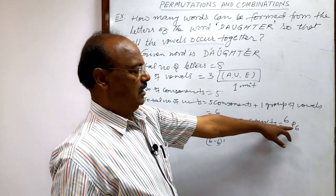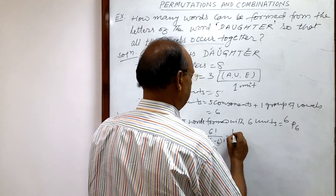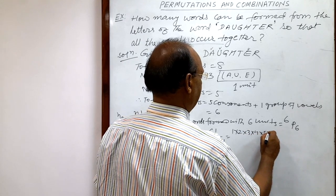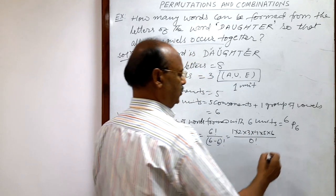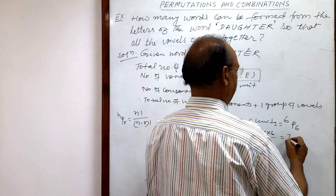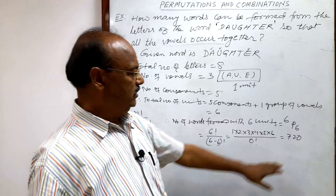n is 6, r is 6, so n factorial by n minus r factorial. 6 factorial is 1 into 2 into 3 into 4 into 5 into 6, and this is 0 factorial, which is 1. So this is equal to how much? Let us multiply it: 720. But this is not the answer.